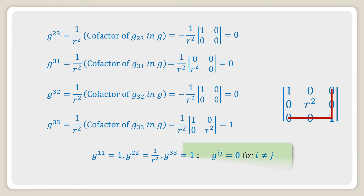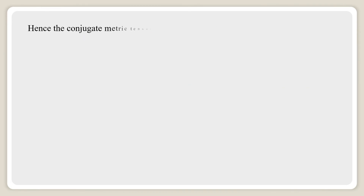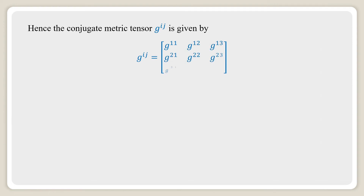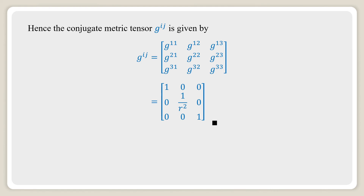Therefore g^11 is equal to 1, g^22 is equal to 1 over r², and g^33 is equal to 1, and g^ij is equal to zero for i not equal to j. Hence the conjugate metric tensor g^ij is given by the matrix: 1, 0, 0; 0, 1/r², 0; 0, 0, 1, which is the required conjugate metric tensor in cylindrical coordinate system.